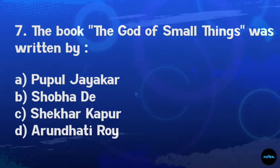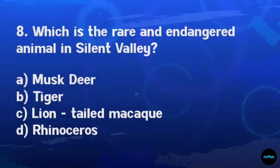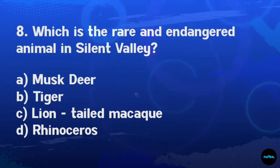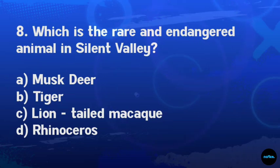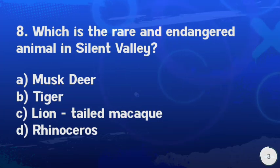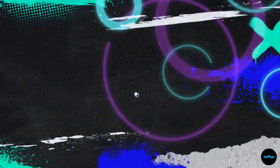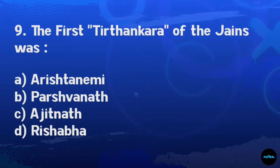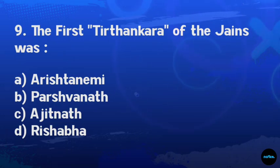The answer is D: Arundhati Roy. The Lion-tailed Macaque is an endangered species. The first Tirthankara of the Jains was: Option A: Arisht Nemi. Option B: Parshvanath. Option C: Ajitnath.